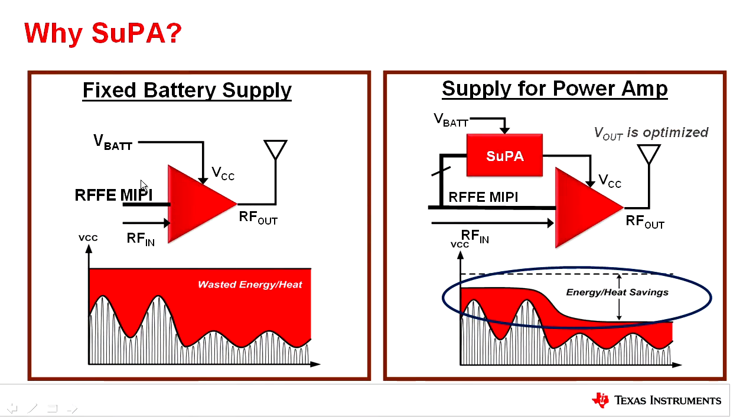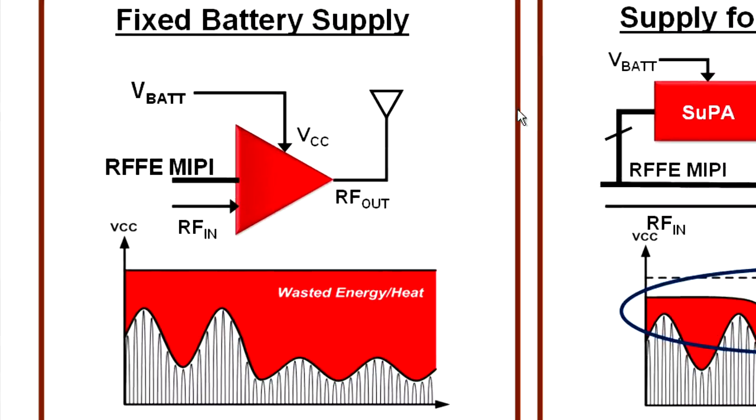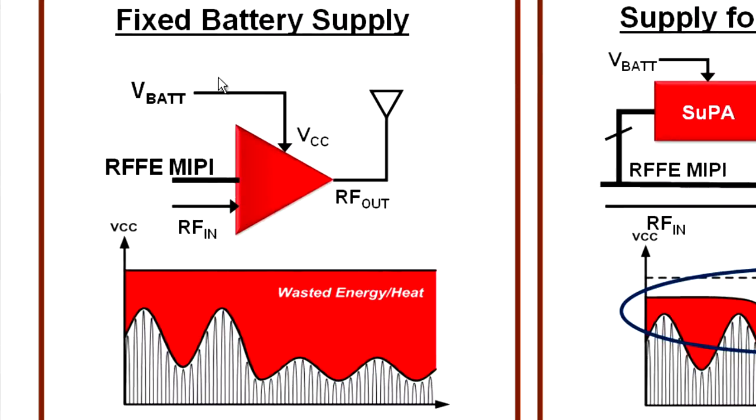Here on the left side, you are seeing the power amplifier with a supply connected directly to a battery. Independent of whether you are sending high-level signals or low-level signals or low-output power, you are going to operate the power amplifier from a maximum battery voltage. And as a result, a lot of energy will be wasted. You will generate a lot of heat on your PCB.